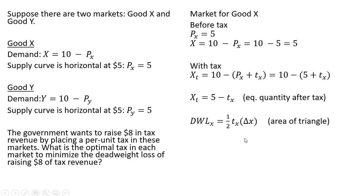So let's get this change in X part. We're going to define the change in X as X, which is 5, minus the output when there is a tax. And this will simplify down very nicely. The 5's cancel to just the tax. So making a substitution, we're going to take the tax in the market for good X and plug it in right here for the change in X. Doing that and simplifying, we have an expression for the deadweight loss in the market for good X.